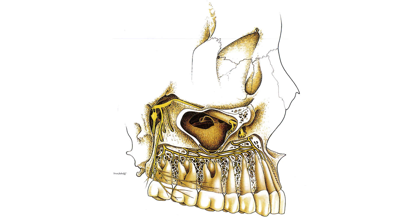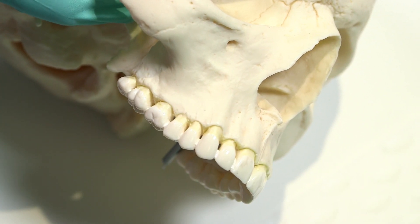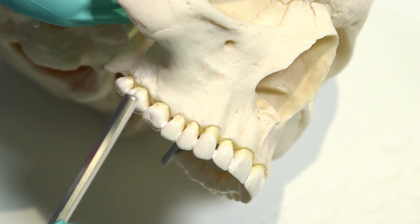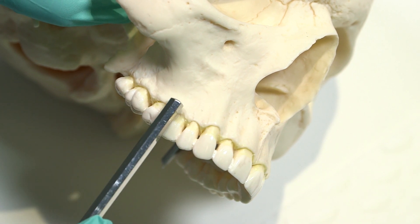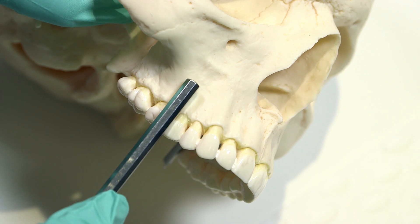The nerve targeted is dependent on the tooth you want to anaesthetise, but will be a terminal branch of either the posterior, middle, or anterior superior alveolar neural plexus. A short needle is required for a buccal infiltration. The target bony site is slightly distal and superior to the apex of the target tooth. You also need to identify the soft tissue landmarks.